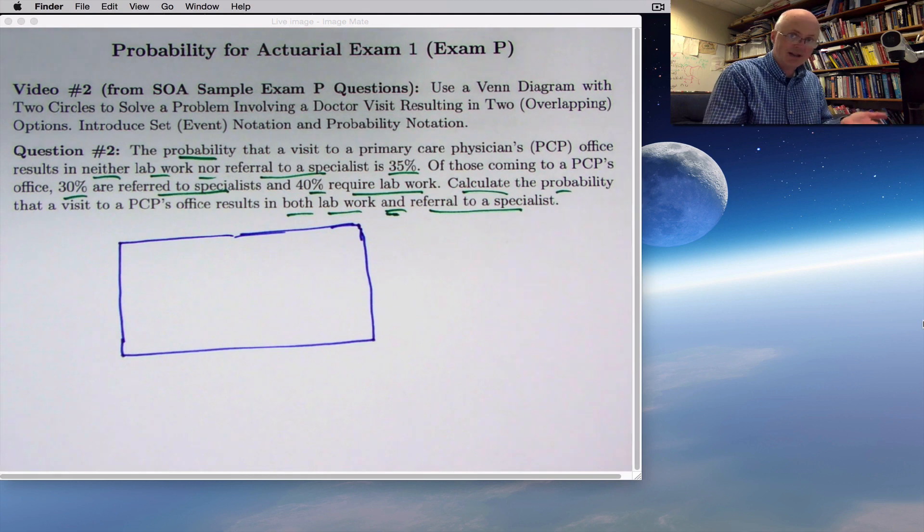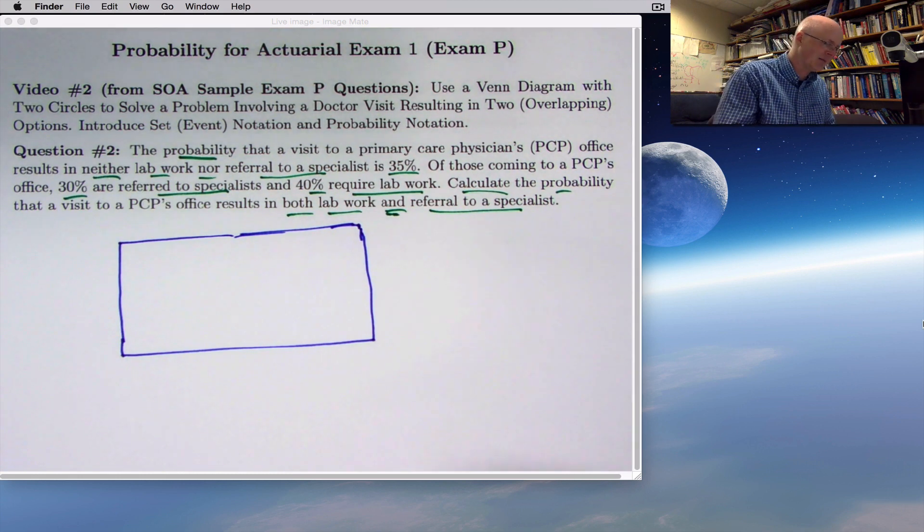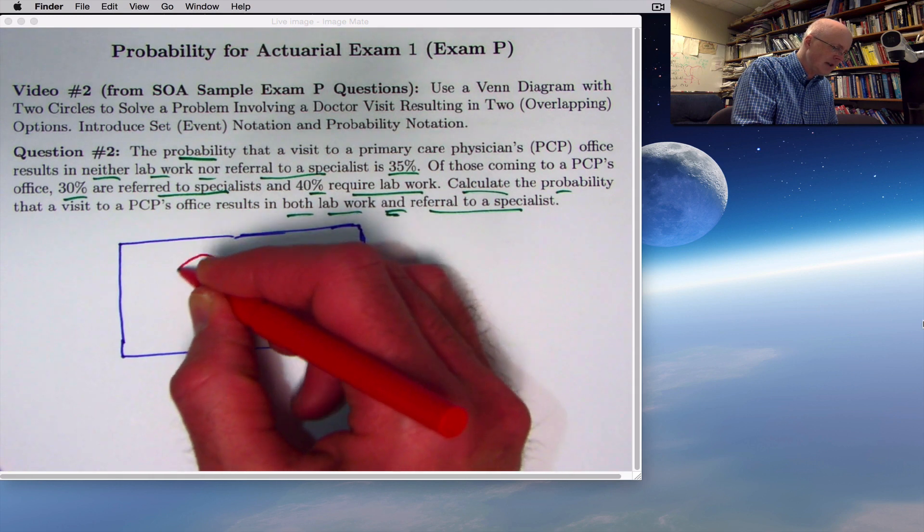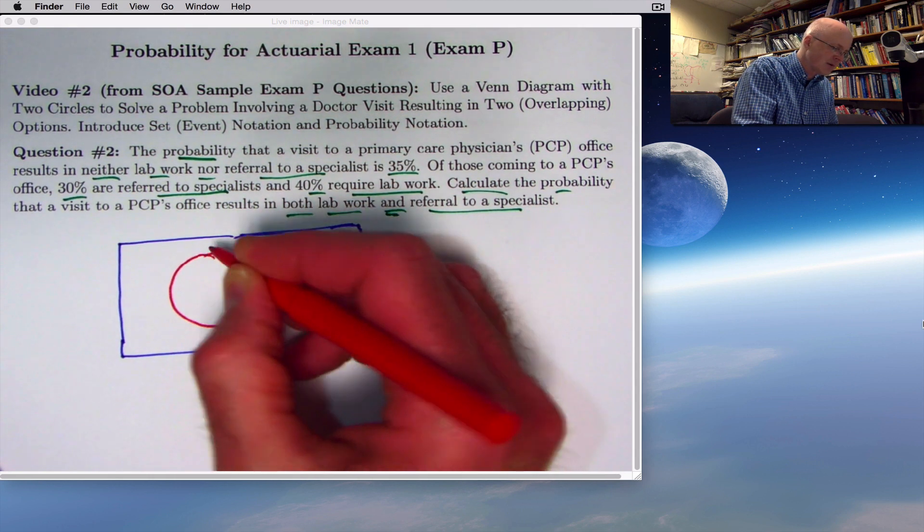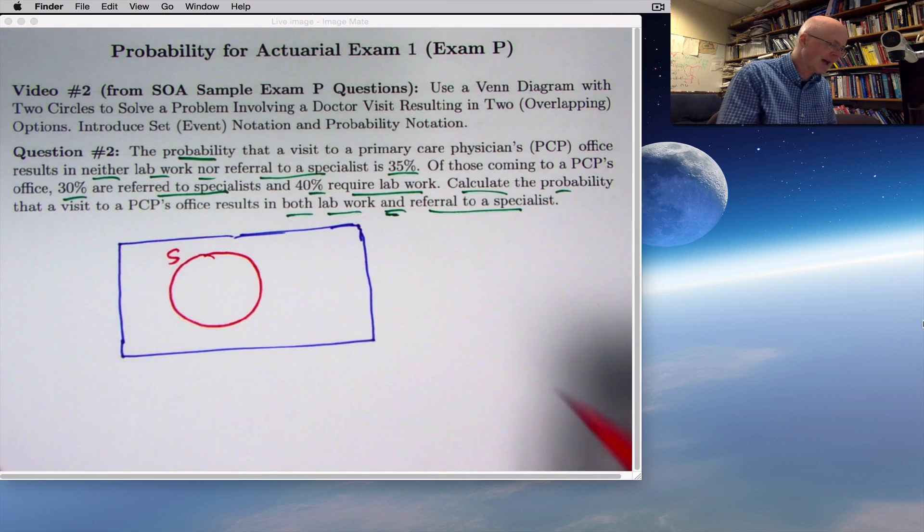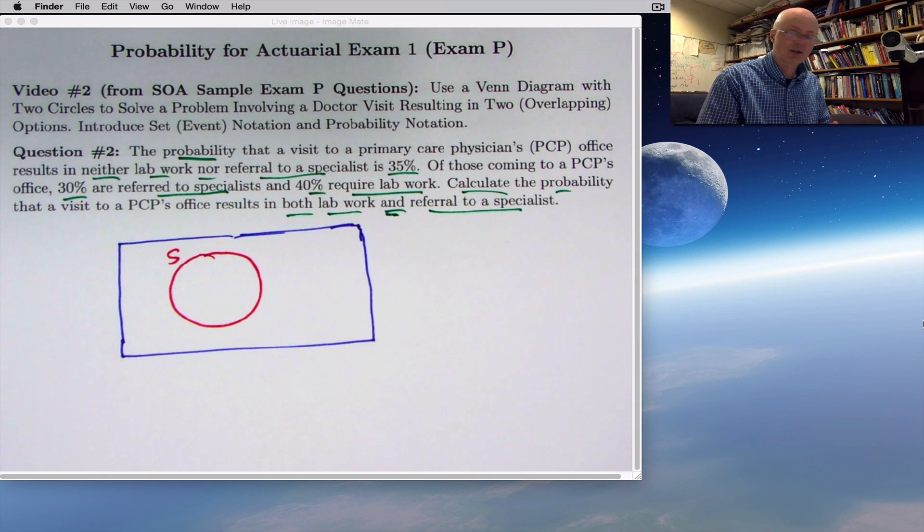Here's our box representing, like I said in the last video, a gymnasium where all the people who have gone to this doctor's office have to stand. You tell them to stand in certain circles based on what they've had done. This circle represents those who were referred to specialists. I'll label that with an S for specialist.